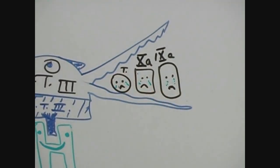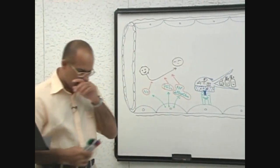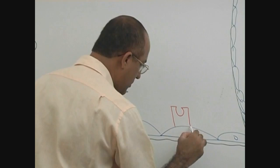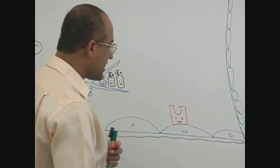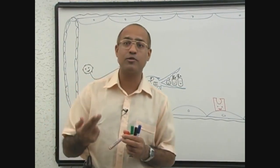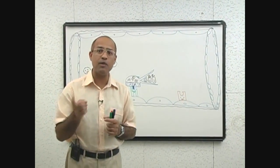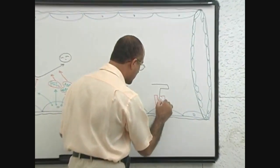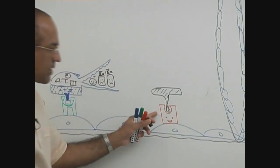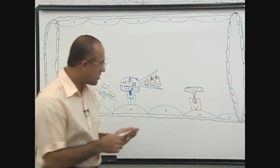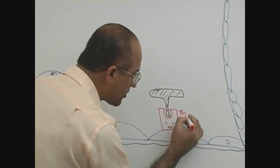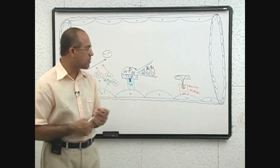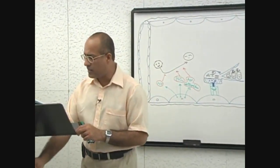Then there are more mechanisms. There is another molecule which is expressed by endothelial cells, and this molecule is very notable because it modulates the function of thrombin. Normally thrombin helps in coagulation, but if thrombin is caught by this molecule, the functions of thrombin are modulated. That is why this molecule is called thrombomodulin. Normal healthy endothelium expresses thrombomodulin, and thrombomodulin binds with thrombin.